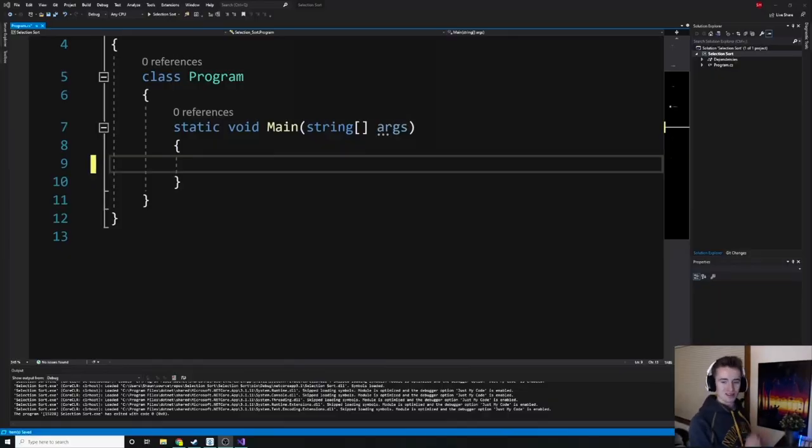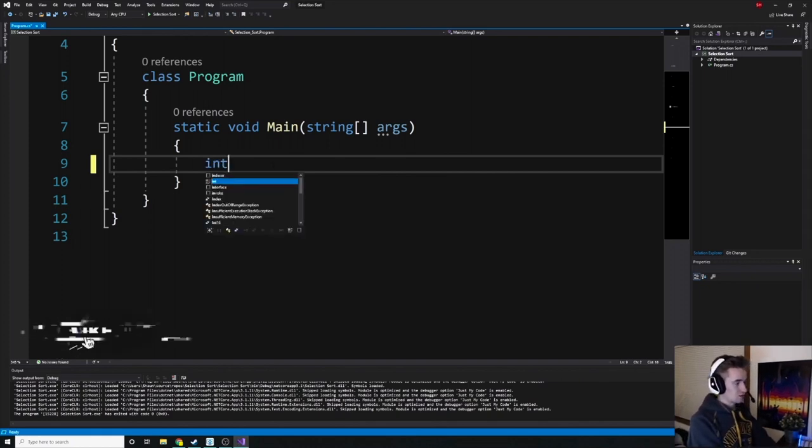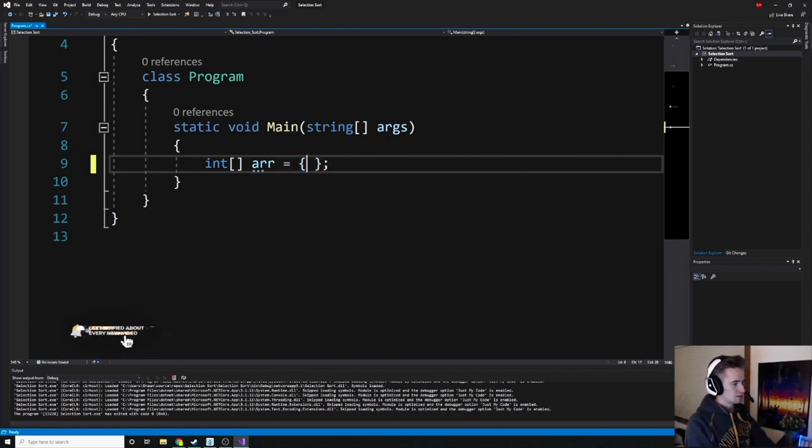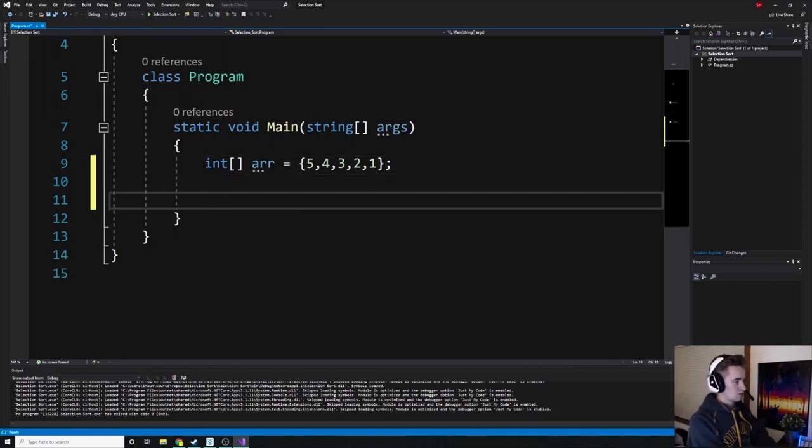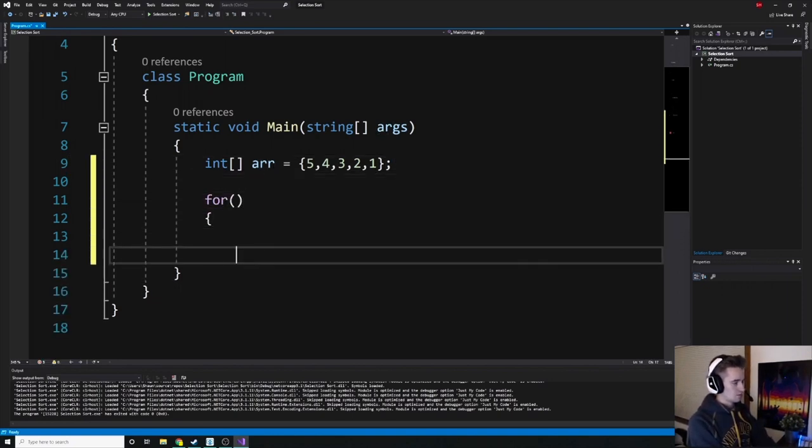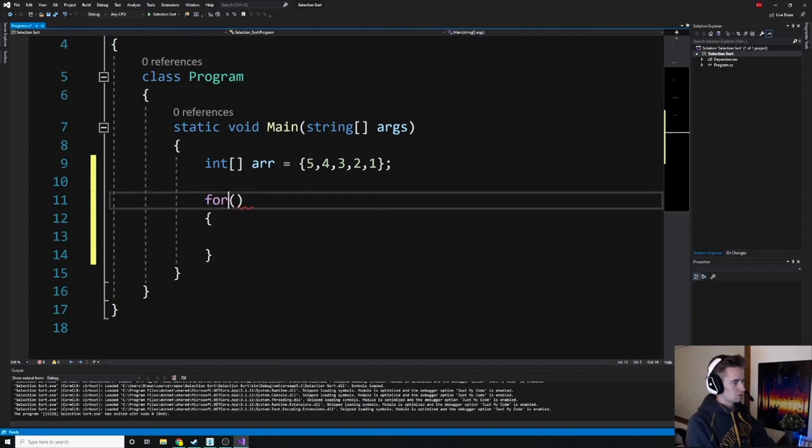All right y'all, thanks for sticking around to this part of the video. Let's just go ahead and do some bubble sorting. So to even sort we of course need an array to sort, so let's just create one. We're going to do that by creating an empty array and call it arr, and then just fill it with some reverse order numbers, which like I said earlier is going to be the worst run time for bubble sorting.